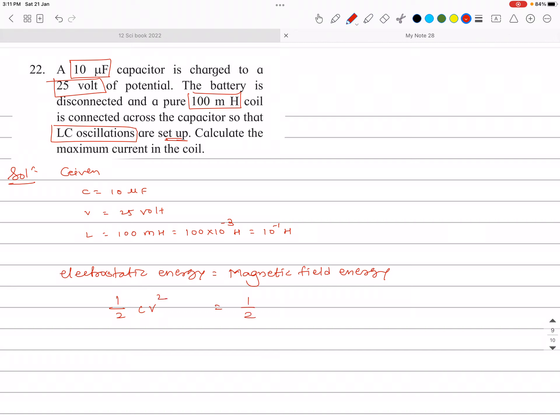Now we can cancel common terms here. One by two gets cancelled, and we have to write the formula for current. So I can write I squared is equal to CV squared by L.